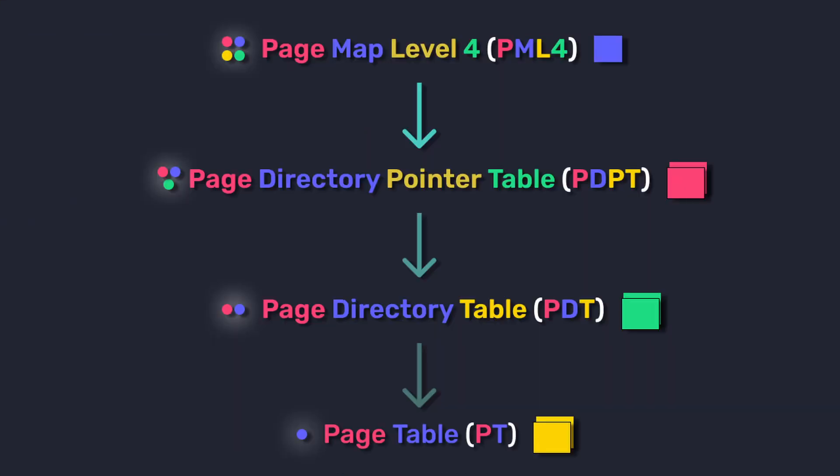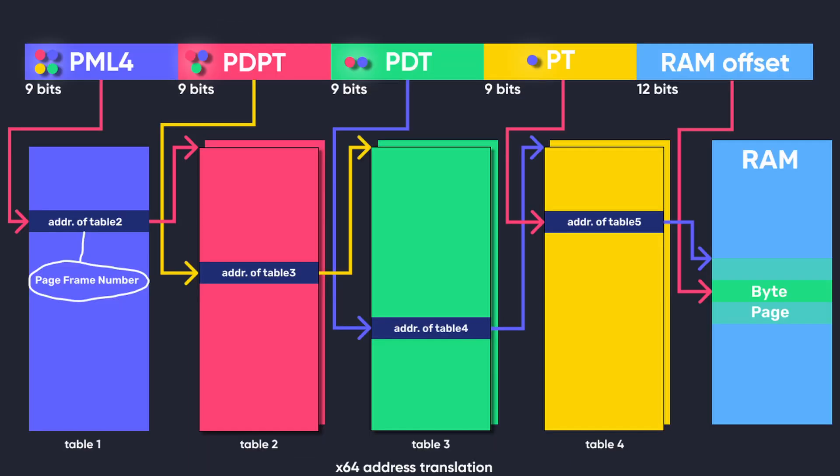The four tables involved in this process are: page map level 4, page directory pointer table, page directory table, and page table. Each of these tables has 256 entries, and each entry contains a page frame number or PFN which points to the start of the next table.